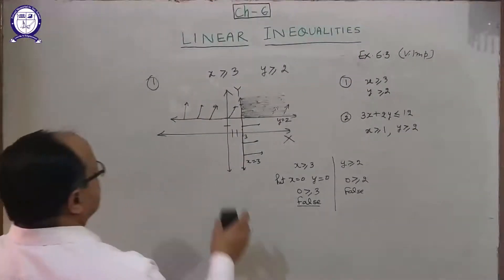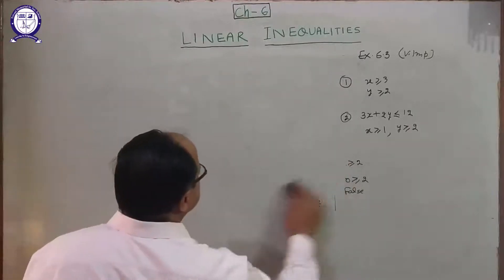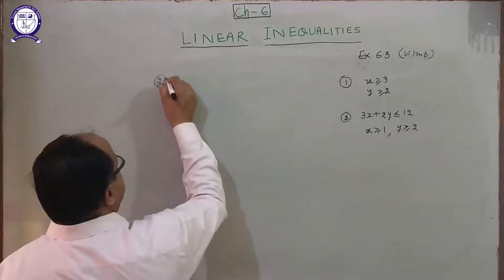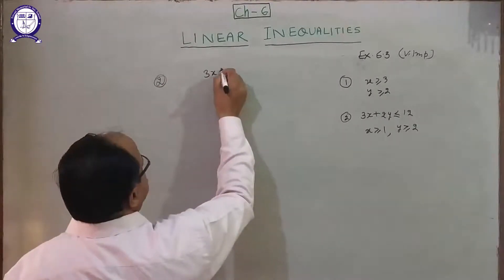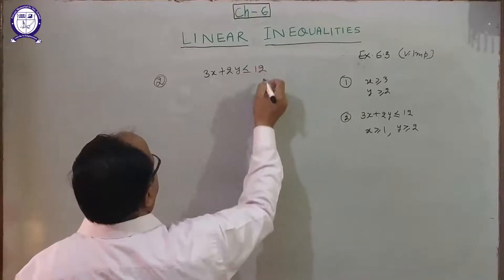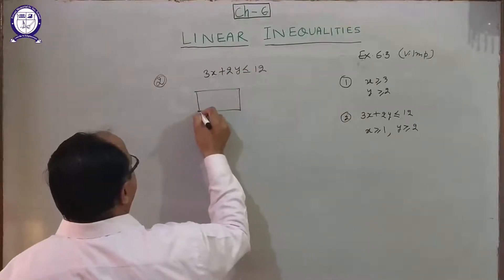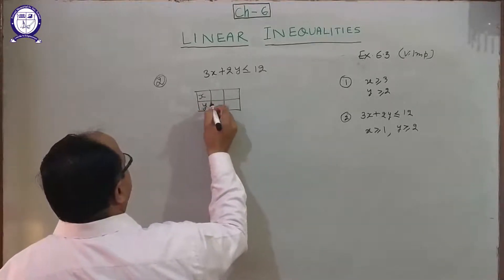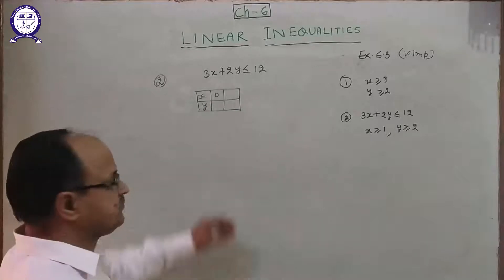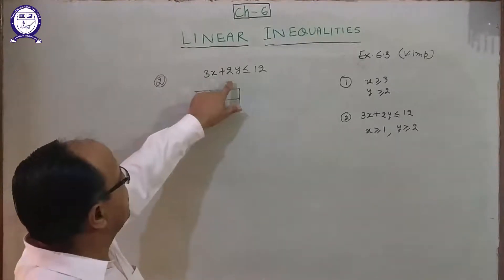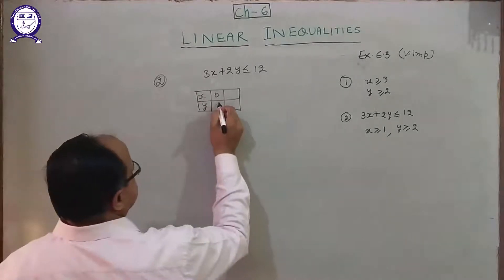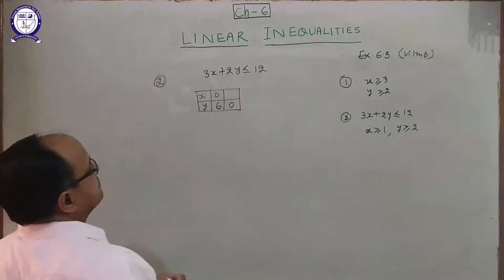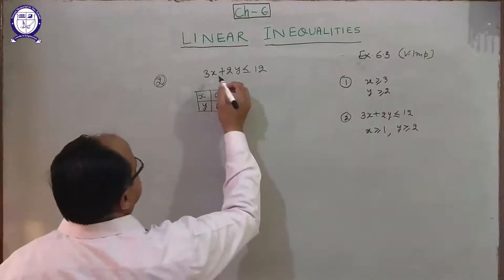Now we solve the second question. The second question has: 3x plus 2y less than or equal to 12. Firstly make the table. Put x equal to 0 — then 2y equals 12, so y equals 6. Put y equal to 0 — then x equals 4.